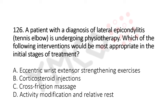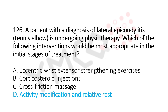Now let's move to question number 126. A patient with a diagnosis of lateral epicondylitis, that's tennis elbow, is undergoing physiotherapy. Which of the following interventions would be the most appropriate in initial stages of treatment? Option A: eccentric wrist extensor strengthening exercises. Option B: corticosteroid injections. Option C: cross friction massage. Option D: activity modification and relative rest. The answer is option D: activity modification and relative rest.